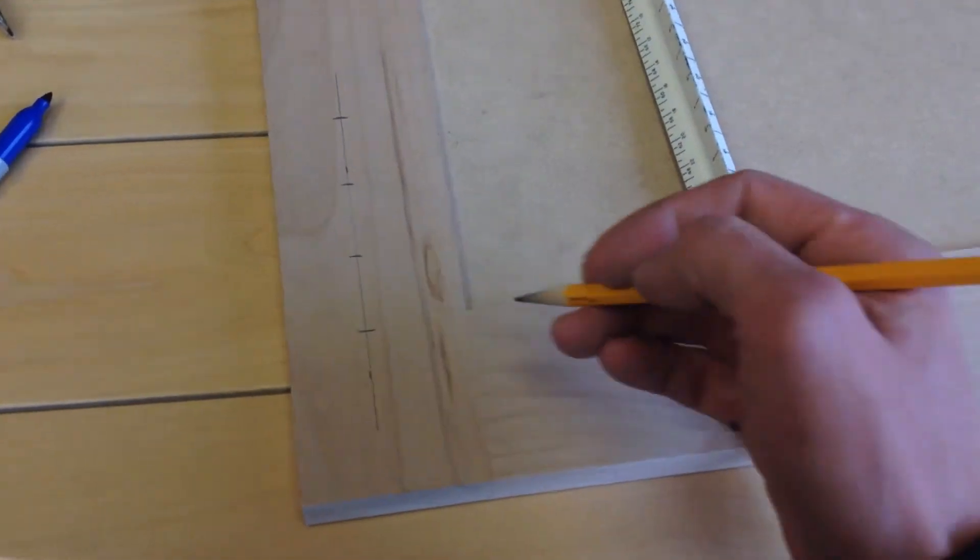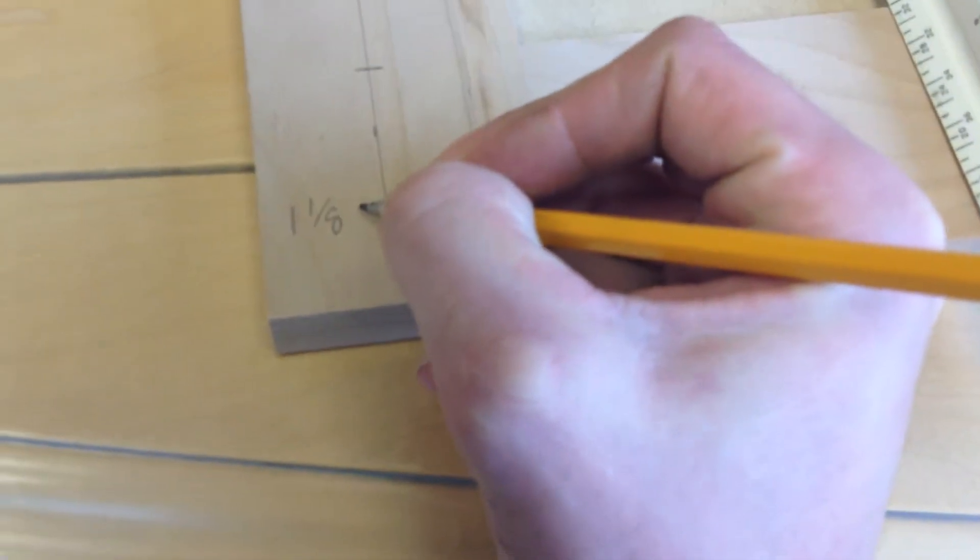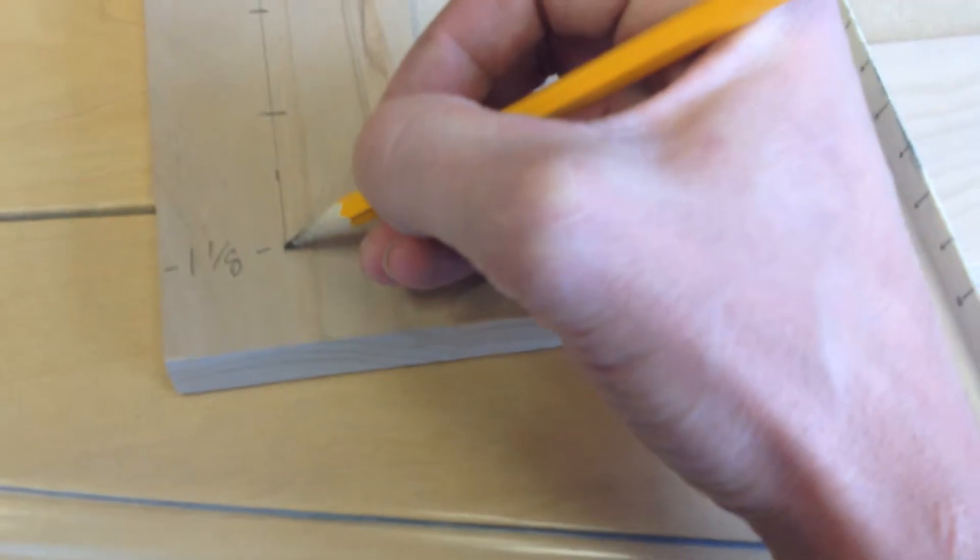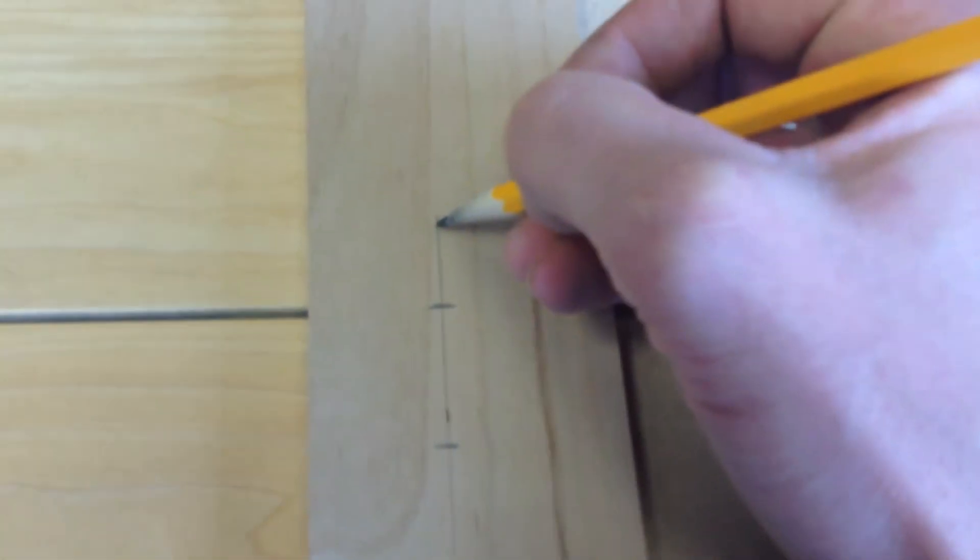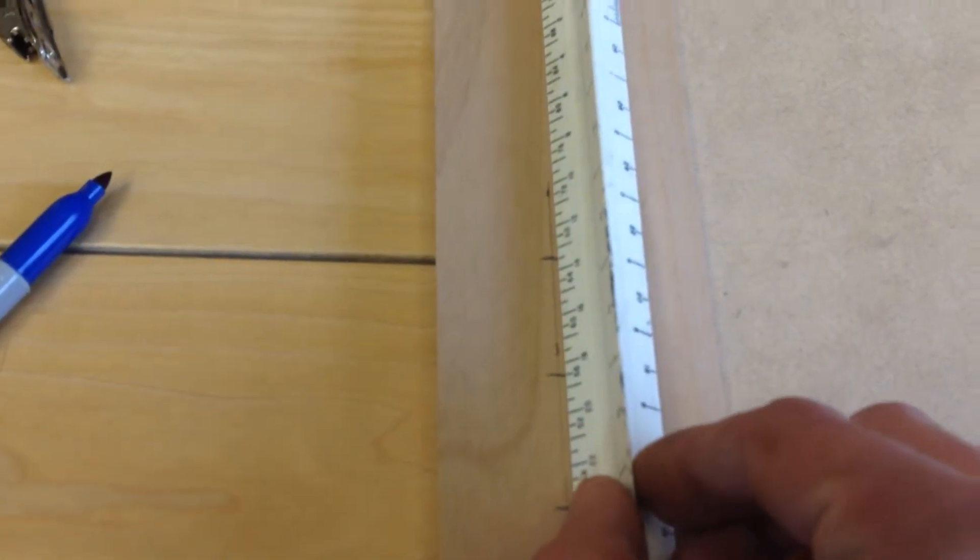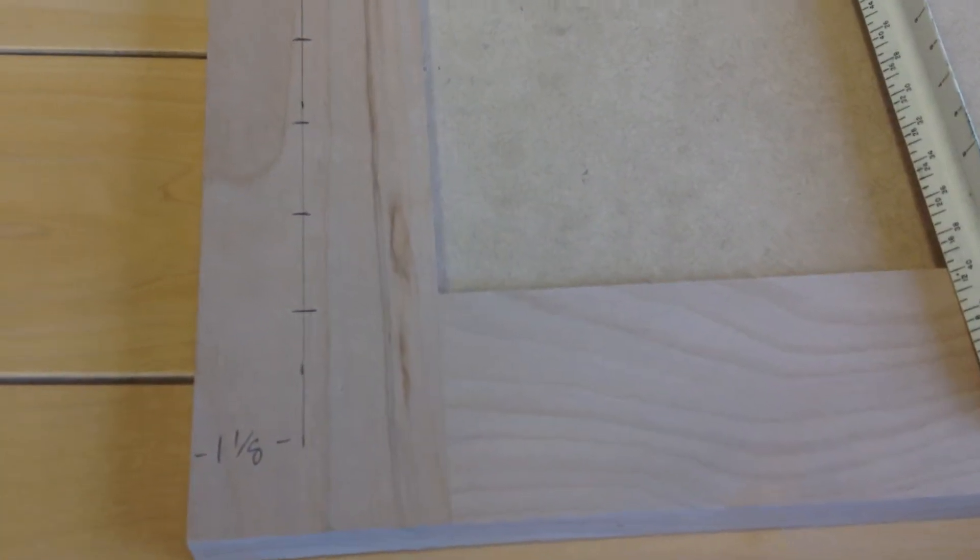Basically what we need to do is, we need to come over an inch and an eighth. And then just draw a line. What I like to do is, I like to measure it out to this point. An inch and an eighth, and then come up here and measure it out an inch and an eighth as well. And then I use my ruler and I'll just make a straight line all the way across. These holes do not have to be dead on exact. Just get it within a sixteenth of an inch and you'll be good to go.